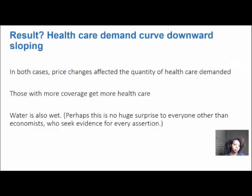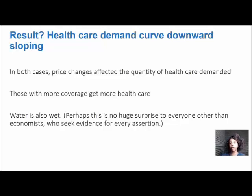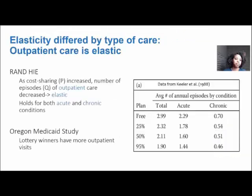What they find is that yes, the demand curve for health care does slope downward. Both in Oregon and in the RAND experiment, price changes did affect the quantity of health care that consumers demand. Those who had more and better coverage consumed more health care goods and services. While that might seem obvious, it informs us of the magnitude of the elasticity we observe, and elasticity differs by the type of care.